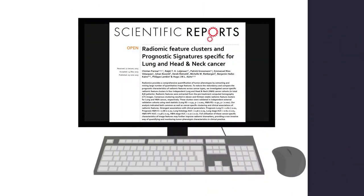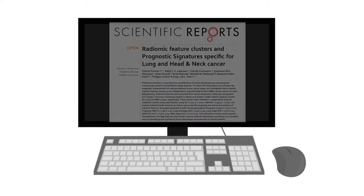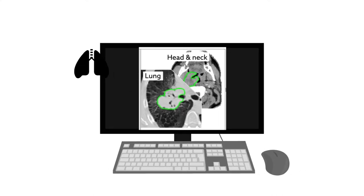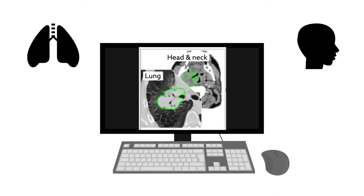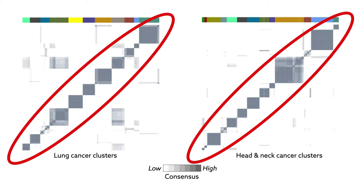To provide further insights into the utility of this approach, a study published in Scientific Reports extracted cancer-specific signatures from CT images of patients with lung and head and neck cancers. The research team applied consensus clustering of over 400 image feature algorithms. This resulted in approximately a dozen clusters for each cancer type.